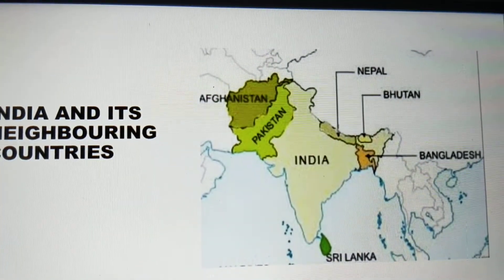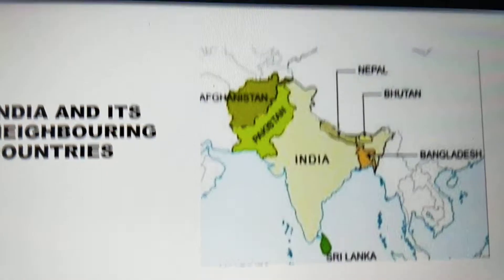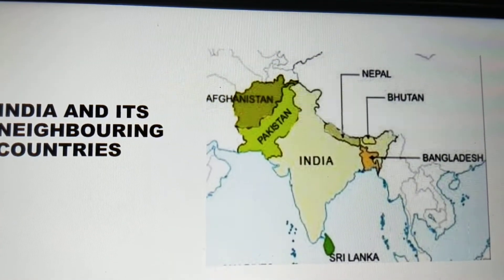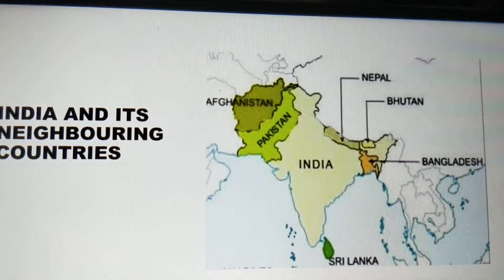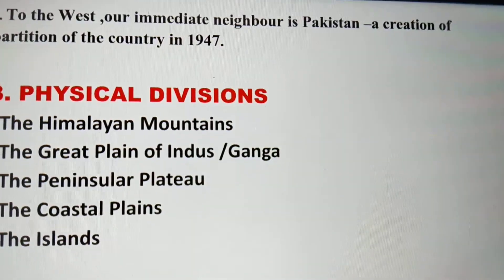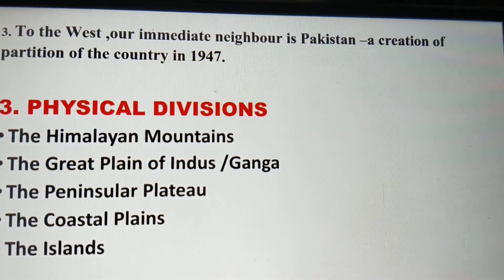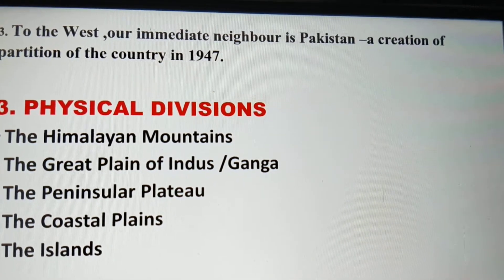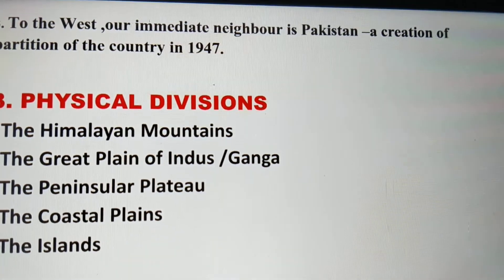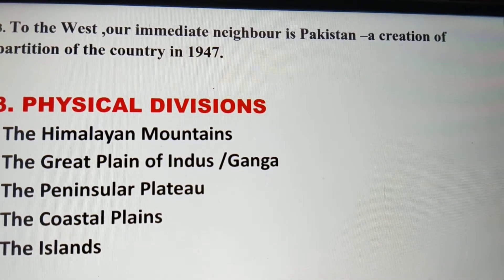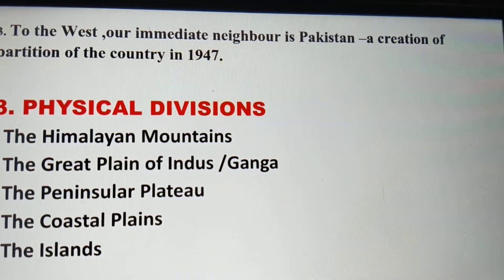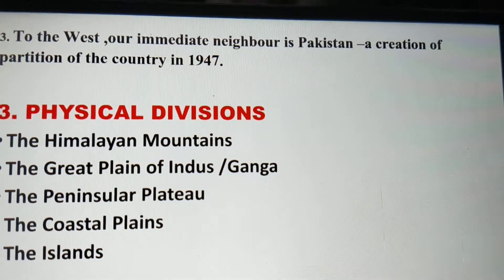Here you can see India and its neighboring countries. India shares its boundaries with Afghanistan, Pakistan, Nepal, Bhutan, Bangladesh, Sri Lanka and Myanmar. To the west, our immediate neighbor is Pakistan, a creation of the partition of the country in 1947.